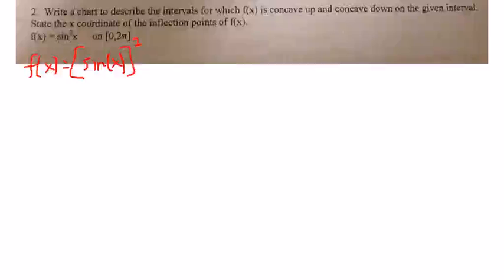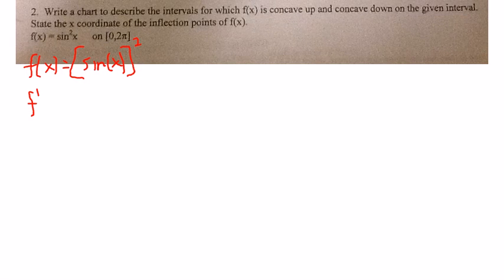Sine squared x, which I've written already here for you as sine of x squared, because it's easier to see the power rule for this. So when I find f prime, I get 2 times the derivative of the inside is cosine x, and then I need to do a power rule on the sine. The sine squared drops down to just a regular first power, so I just get times sine of x.